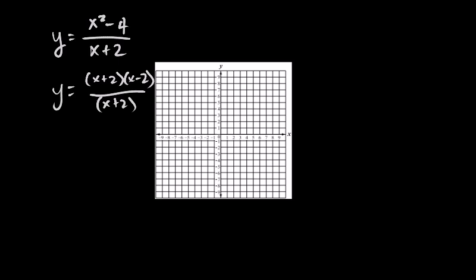And we would all agree that the x plus twos reduce. So since the x plus twos reduce, the value that would make the bottom equal zero is x equals negative two. And instead of it being a vertical asymptote, that is the x value of your hole.